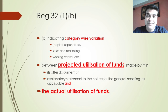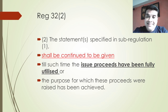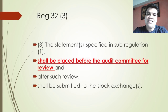Regulation 32 states that the statement of variation shall be given to the notice of the general meeting and showing the actual utilization of funds, till such time as the issue proceeds have been fully utilized or the purpose for which these proceeds were raised has been achieved. Regulation 32(3) states that these statements shall be placed before the audit committee for review, and after the review it shall be sent to the stock exchange.